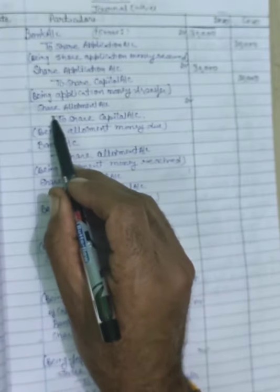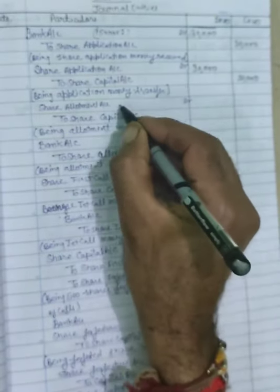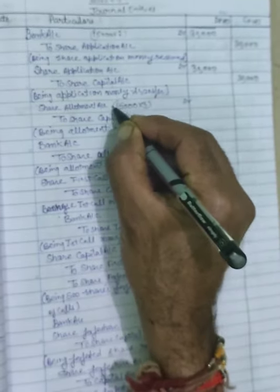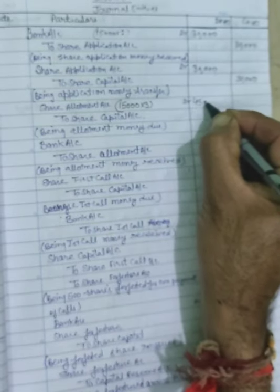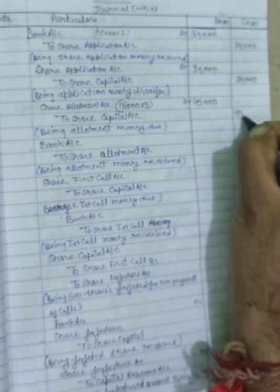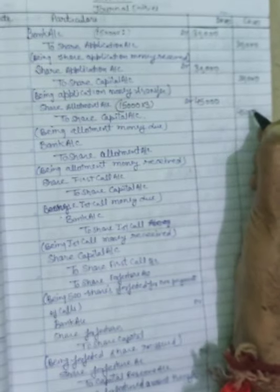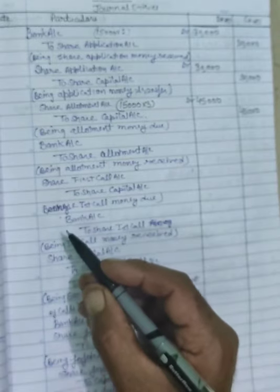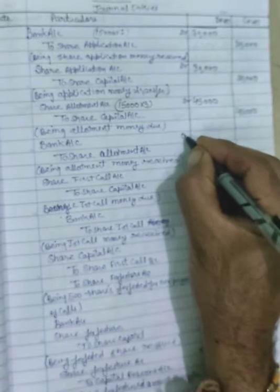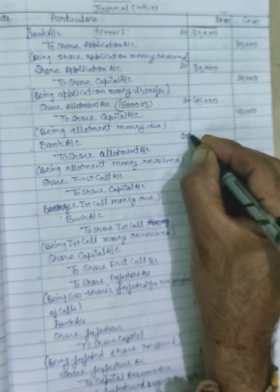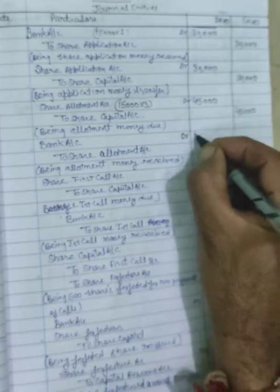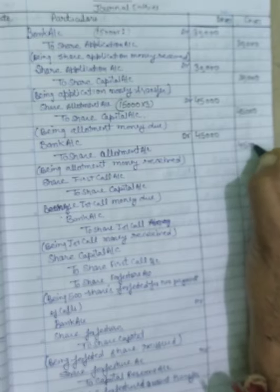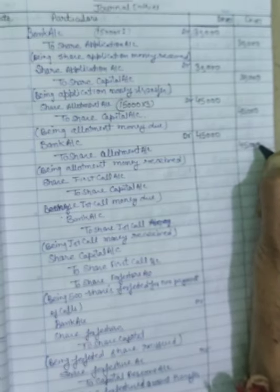Allotment due entry: Share allotment account debit to share capital. 15,000 shares at the rate of Rs.3 per share = Rs.45,000 and Rs.45,000. Narration: being allotment money due. Then bank account debit to share allotment account Rs.45,000 and Rs.45,000 - being allotment money received.